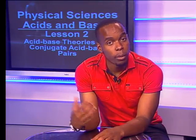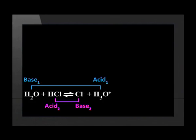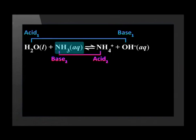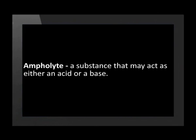Some substances, such as water, have the ability to act as either an acid or a base, in that they can donate or accept a proton. Water takes on whatever role is required: if water reacts with an acid, the water will act as a base. We say that water is an ampholyte. An ampholyte is a substance that may act as either an acid or a base.